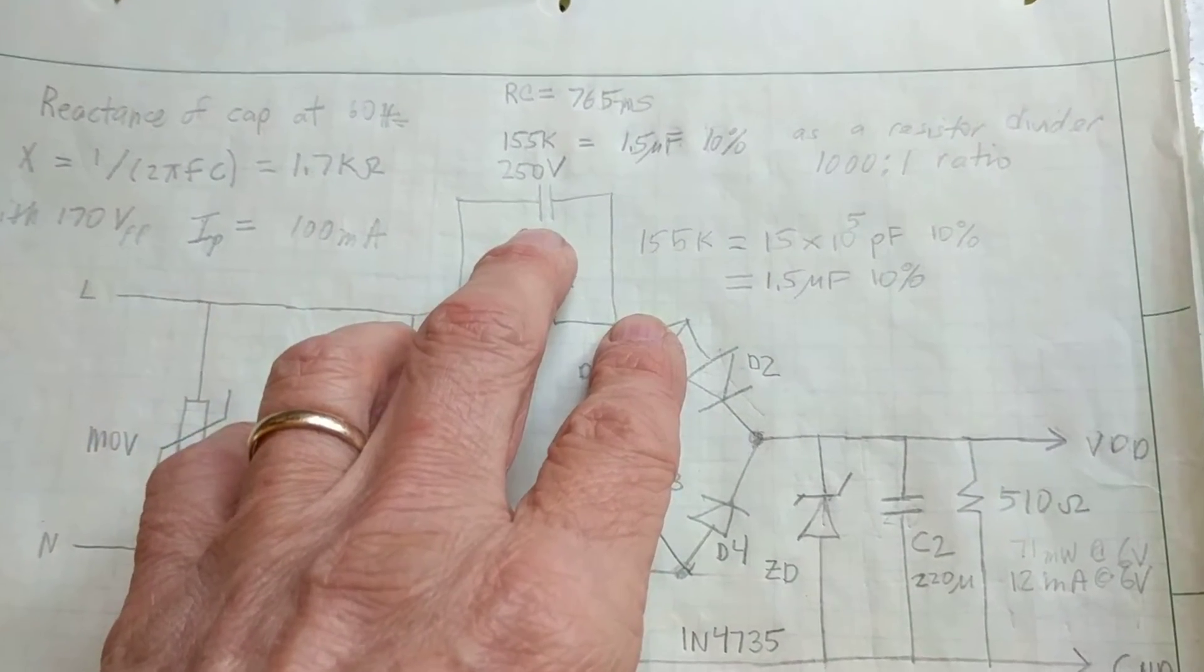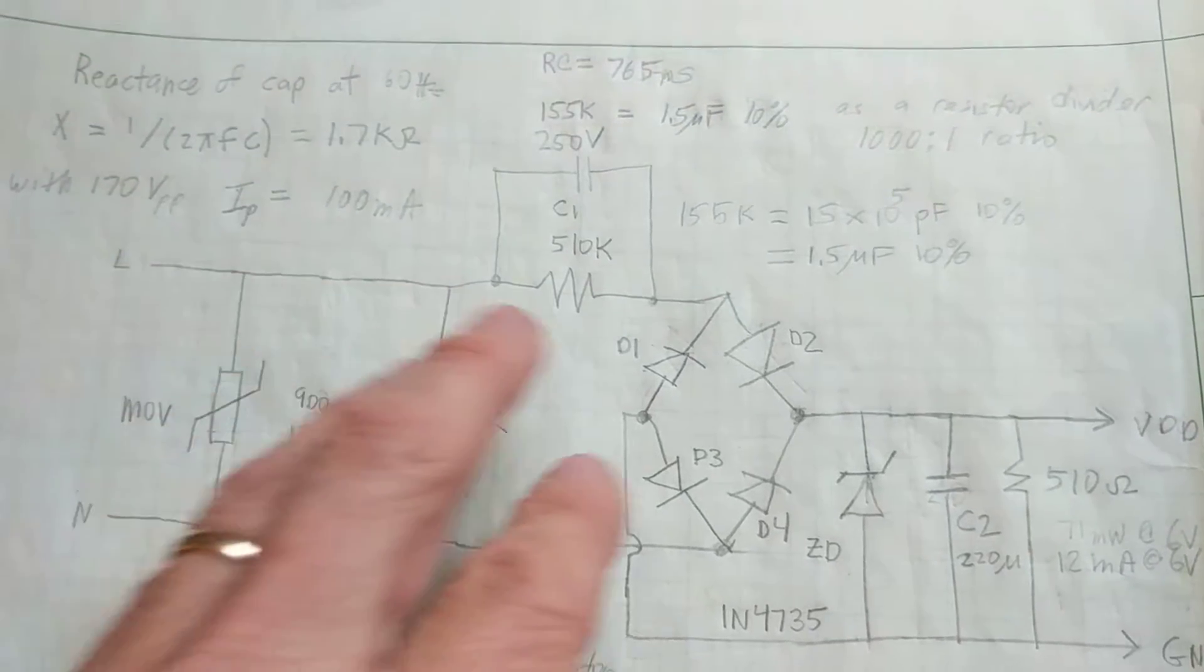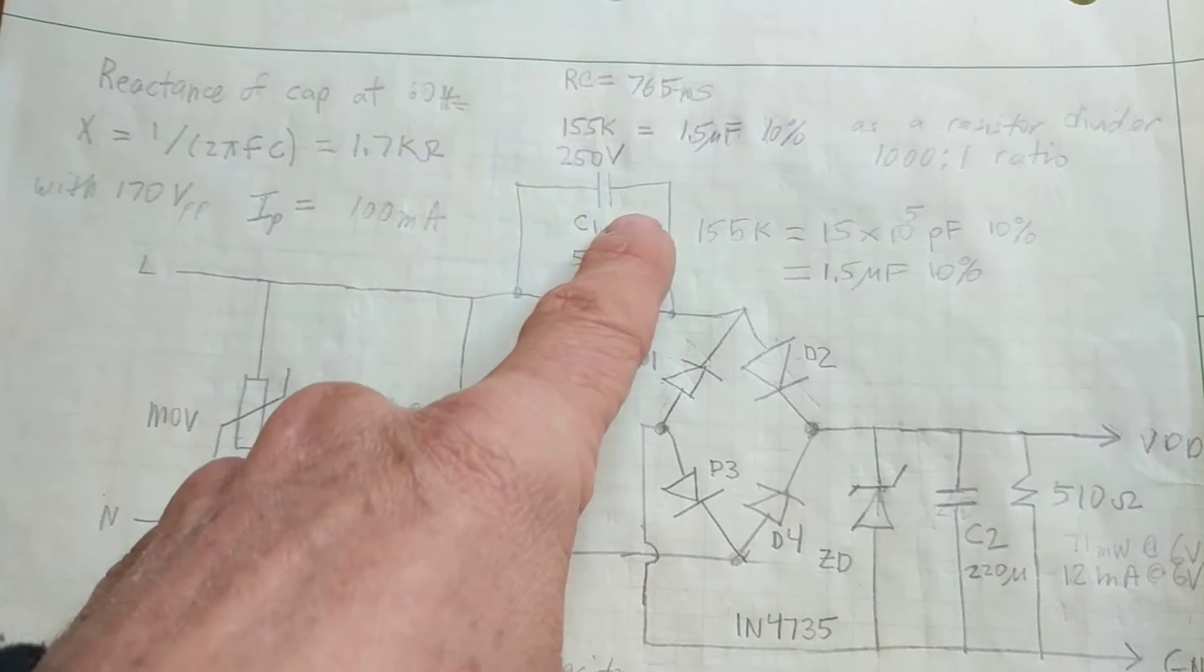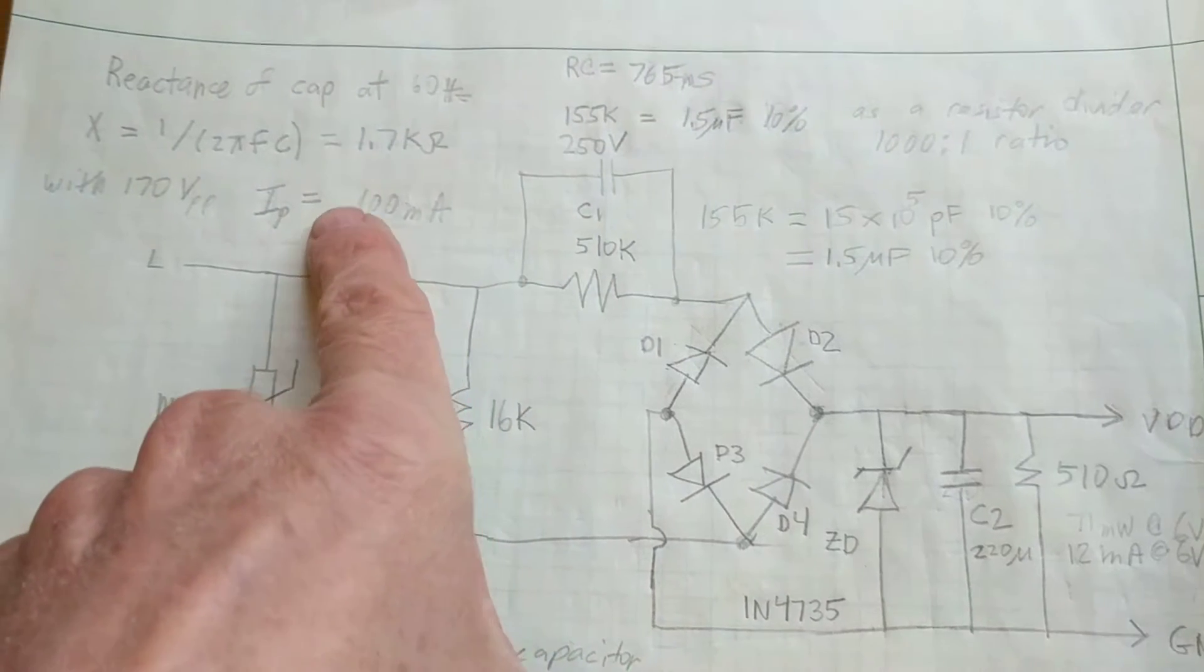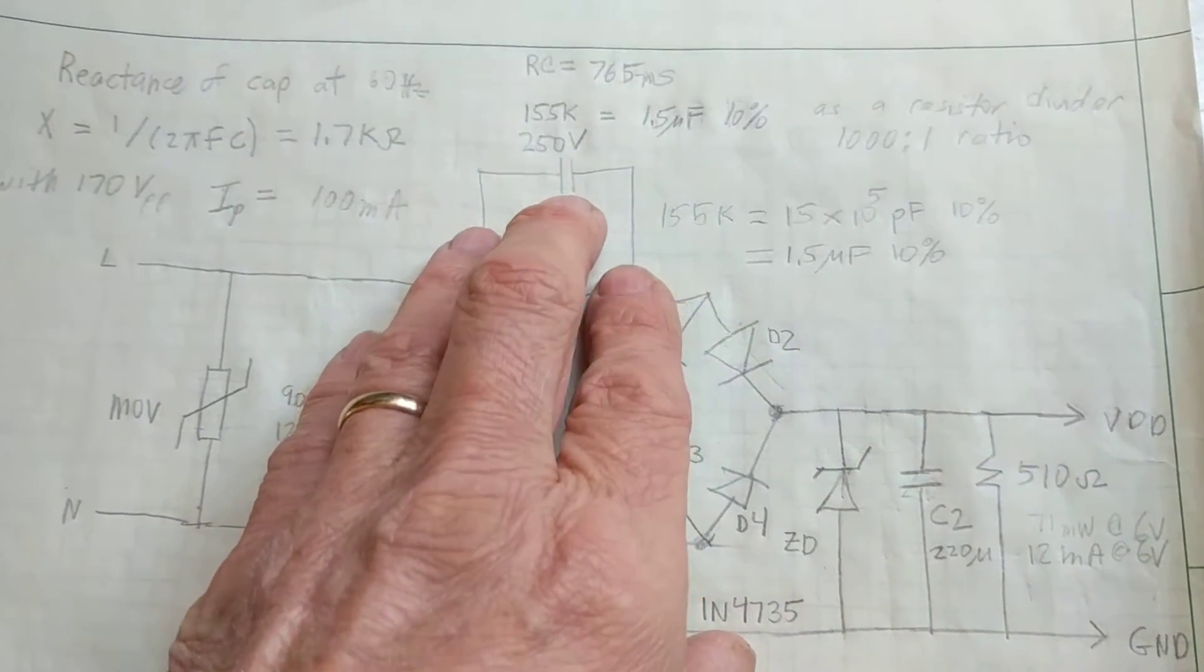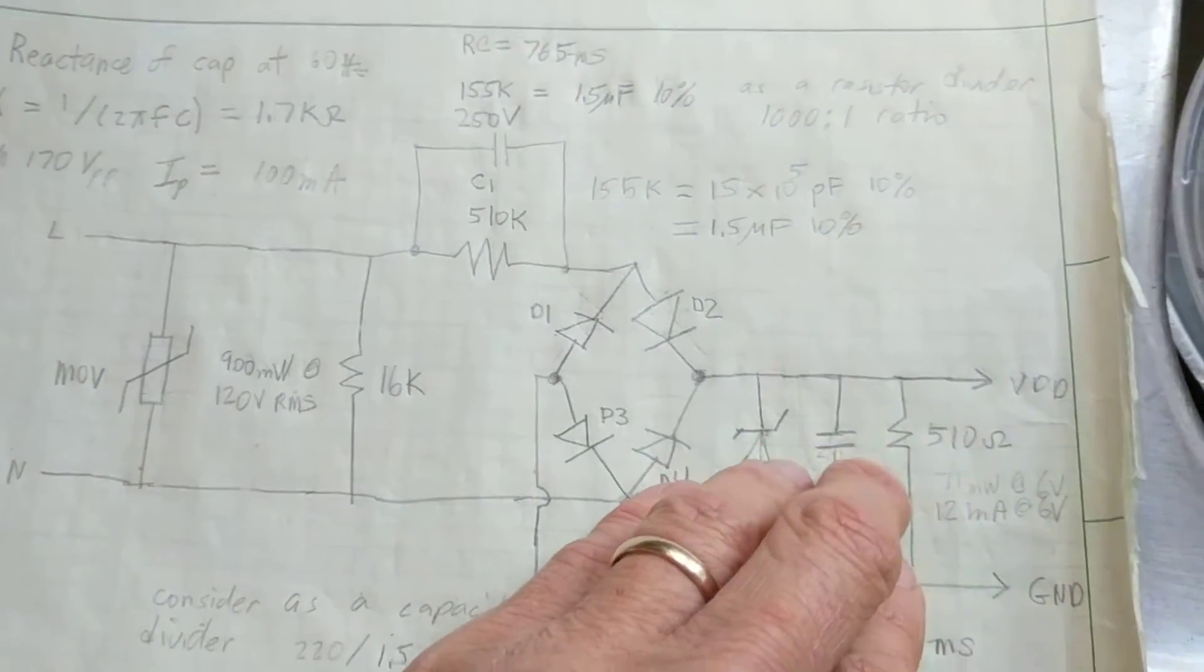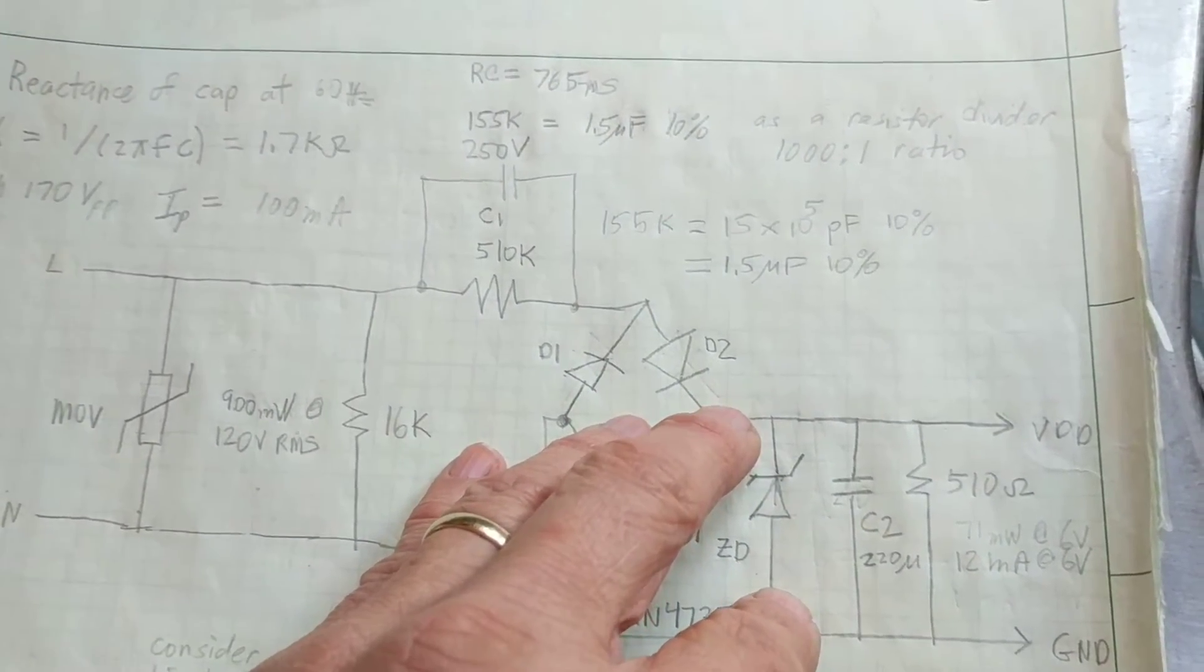And what happens is the impedance of this capacitor at 60 hertz turns out to be 1.7 K. And that acts as a divider that voltage against the impedance that's down here so as to drop this voltage down.